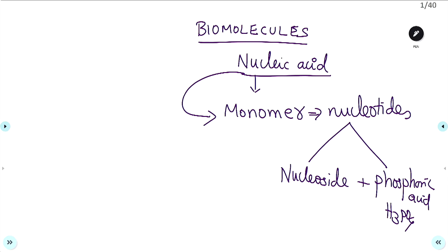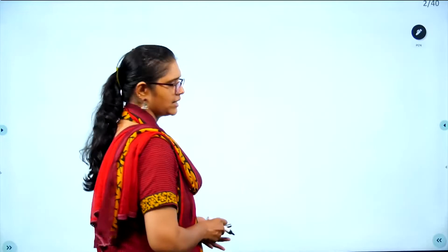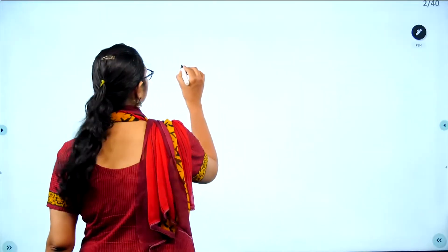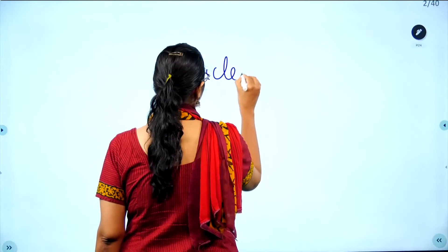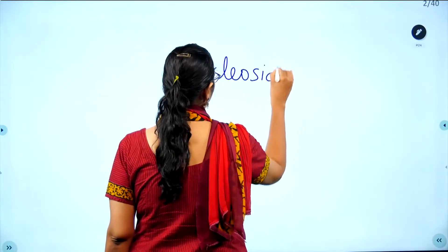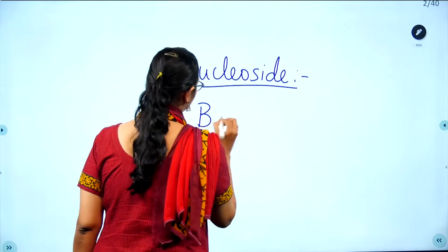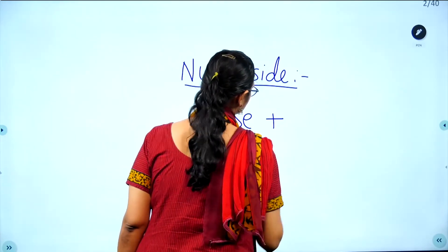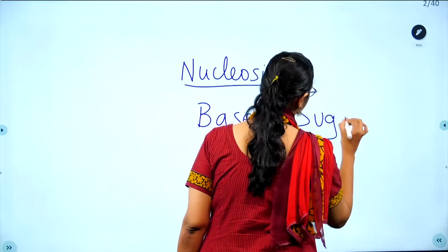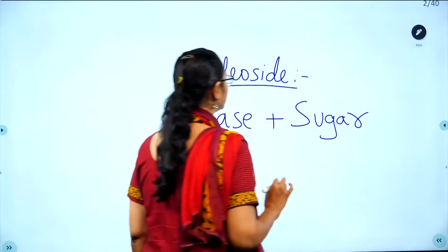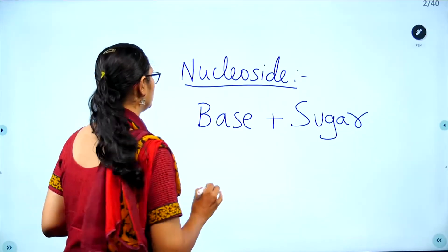Nucleic acids are made up of nucleotides. Nucleotides are made up of a nucleoside and phosphoric acid. A nucleoside is nothing but a base plus a sugar (carbohydrate). So: base plus sugar equals nucleoside.